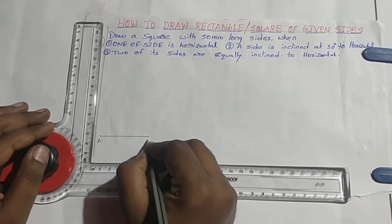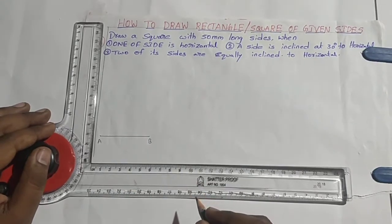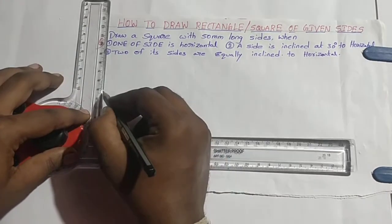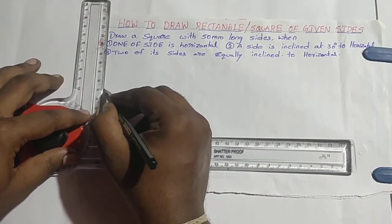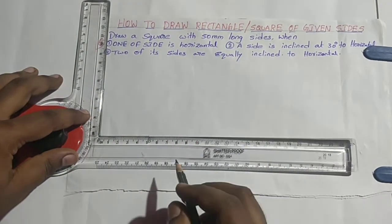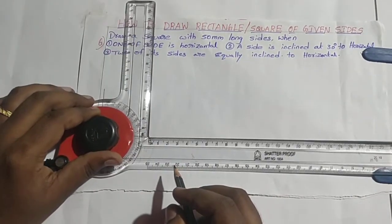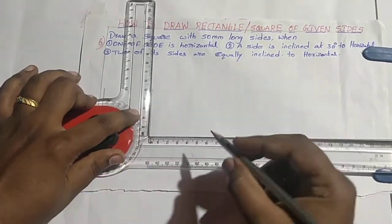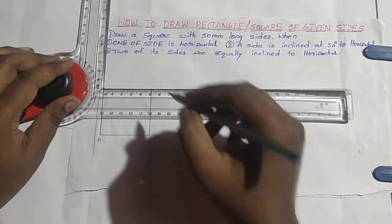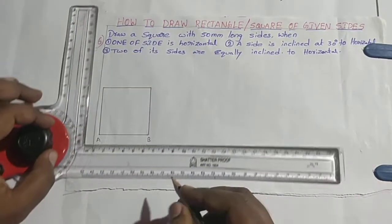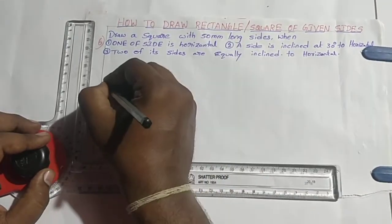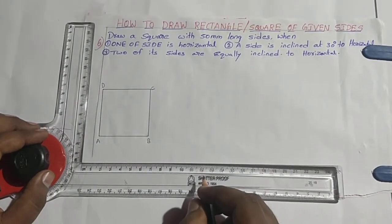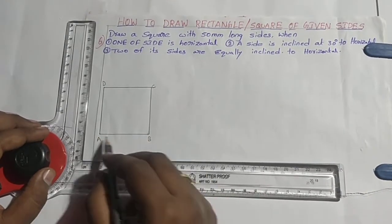I am marking the two ends A and B. Next, from A, draw another side with length 50 mm — because a square has four equal sides. Similarly, from point B also draw a 50 mm line. Next, join these two ends C and D. Now we have completed the first condition: one of the sides is horizontal, and here side AB is horizontal.